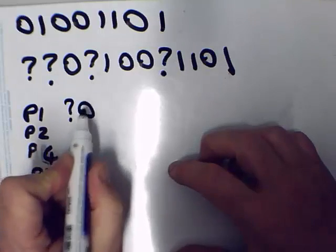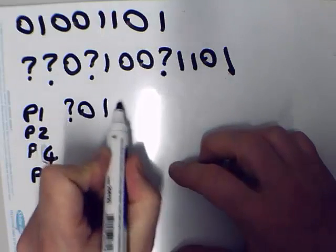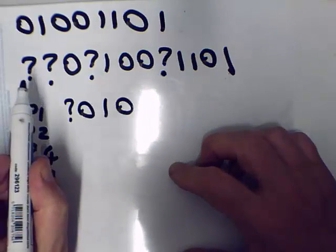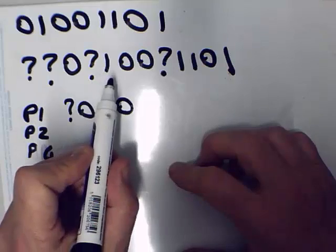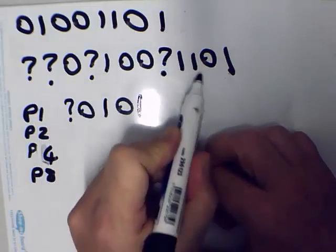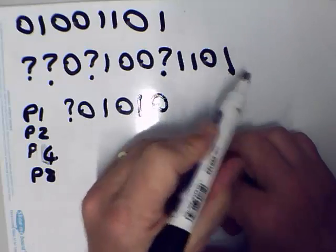Then skip, use, skip, use, skip, use. We just repeat that all the way along: skip, use, skip, use, and so on. As you can see, we end up not using the other parity bits.